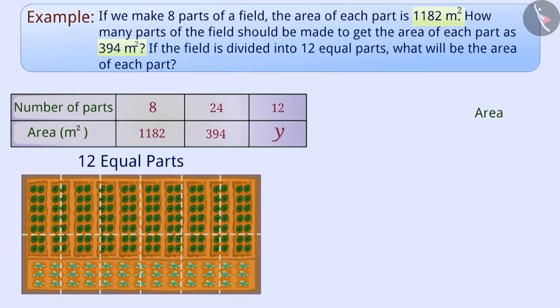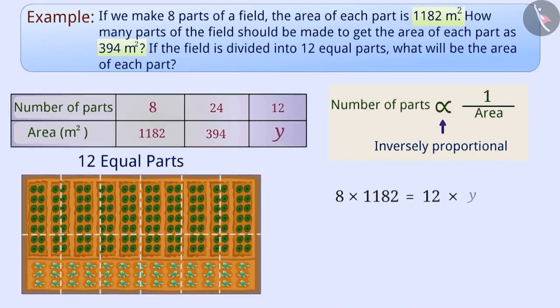Since the number of parts and the area of each part are inversely proportional, we can say that 8 × 1182 = 12 × y. That is, y = (8 × 1182) ÷ 12 = 788 m².